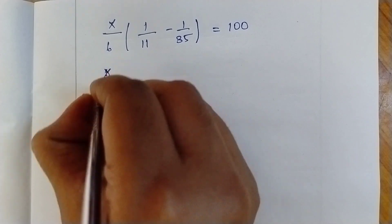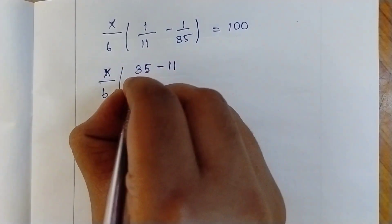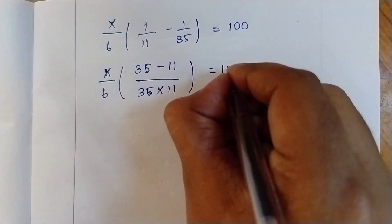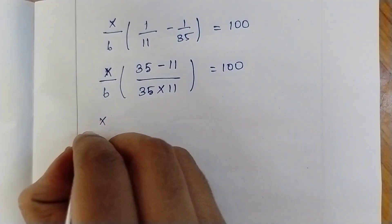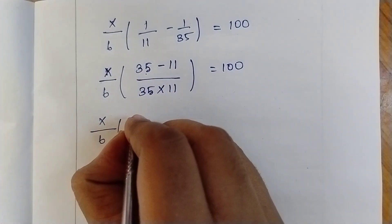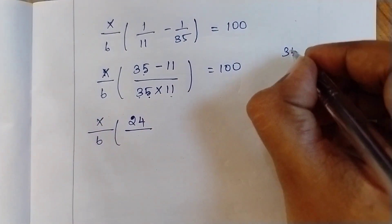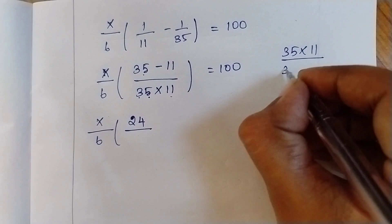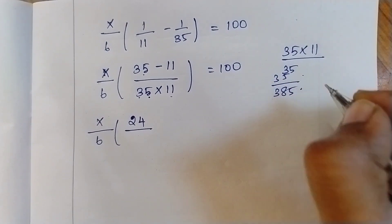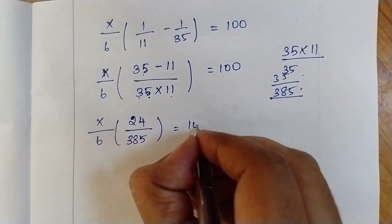Now we want to simplify this. Taking the LCM: x/6 × (35−11)/(35×11) = 100. So x/6 × 24/385 = 100. Now 35 into 11 is 385.